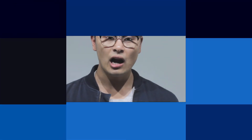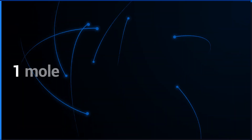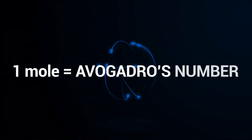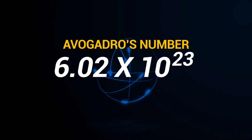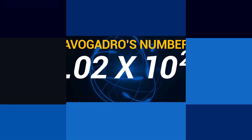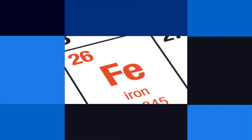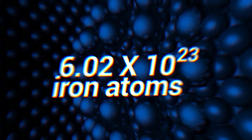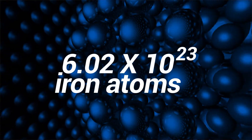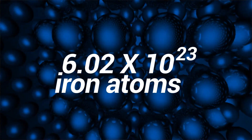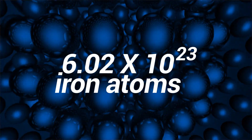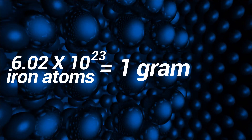Just to summarize today's lesson: 1 mole is equal to Avogadro's number, which is 6.02 times 10 to the power 23. Going back to iron, which has an atomic mass unit of 55.8 — if I had 6.02 times 10 to the power 23 atoms of iron, that would equal 1 gram.